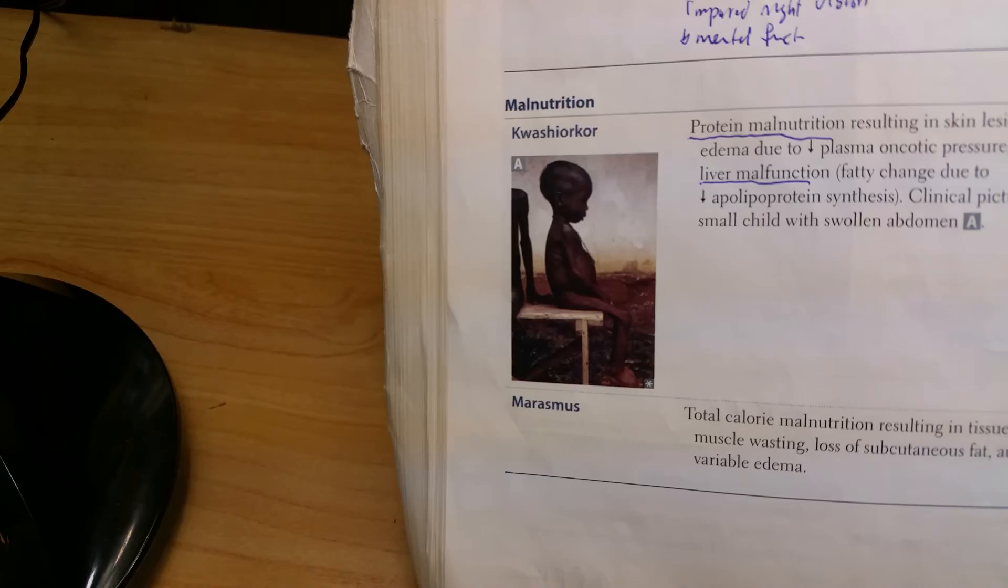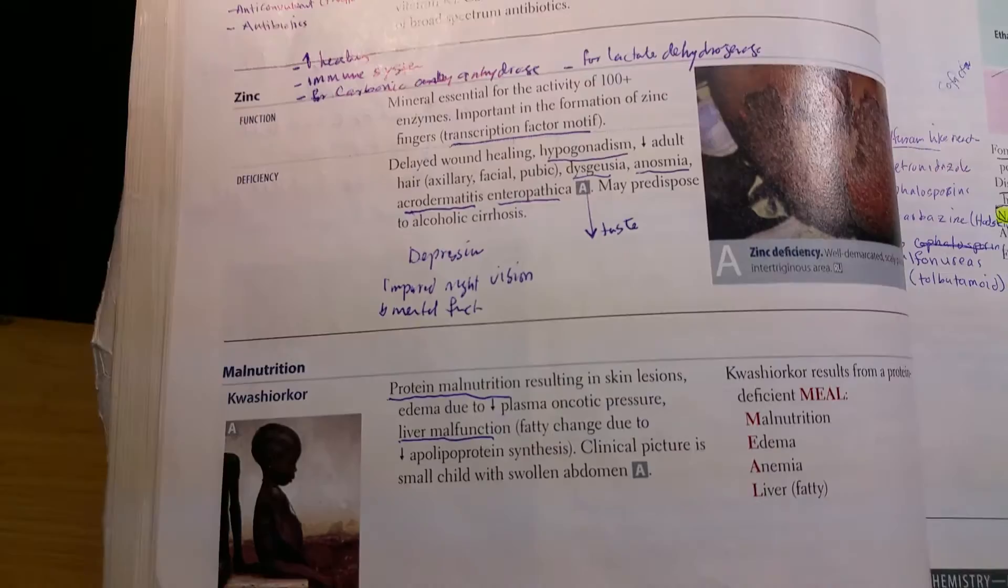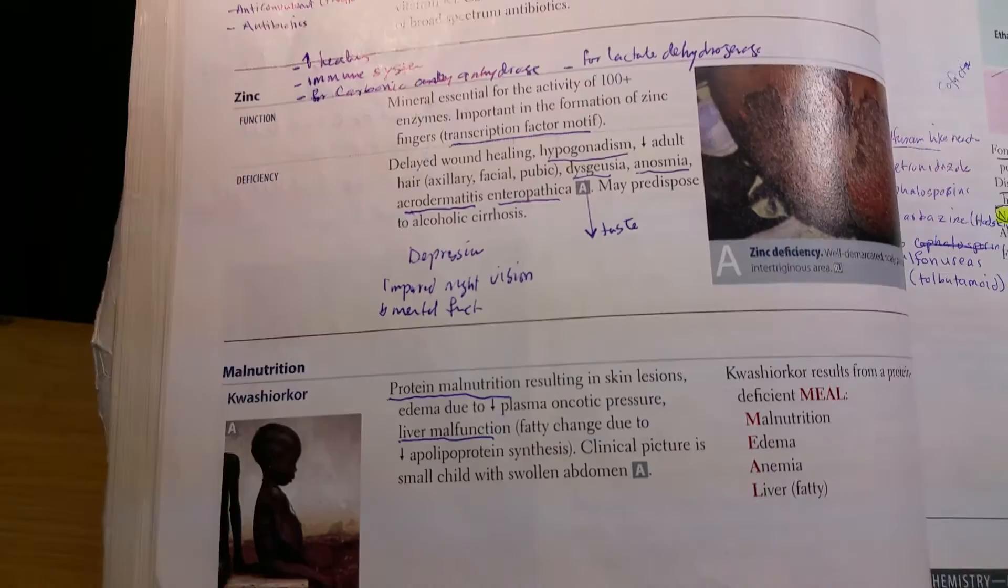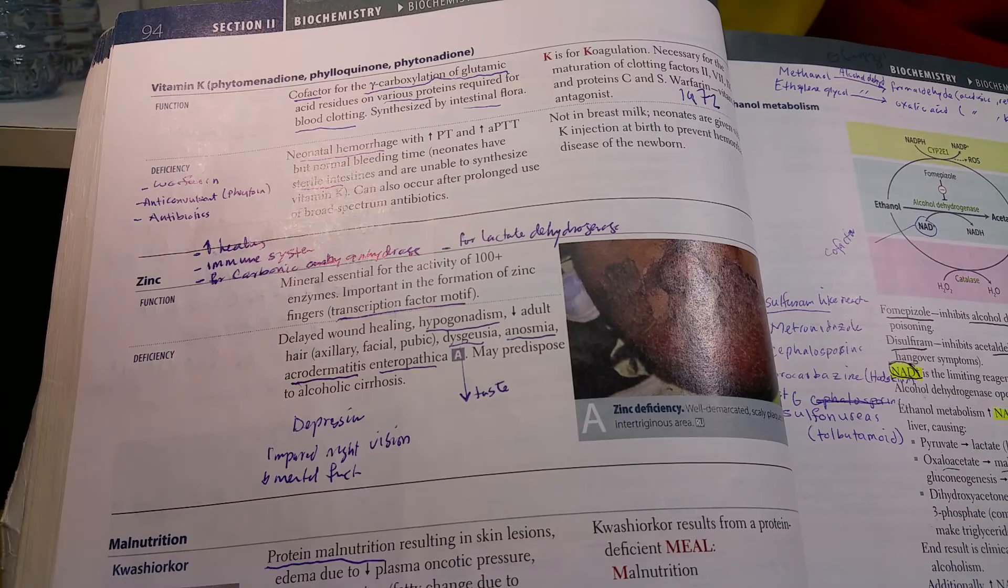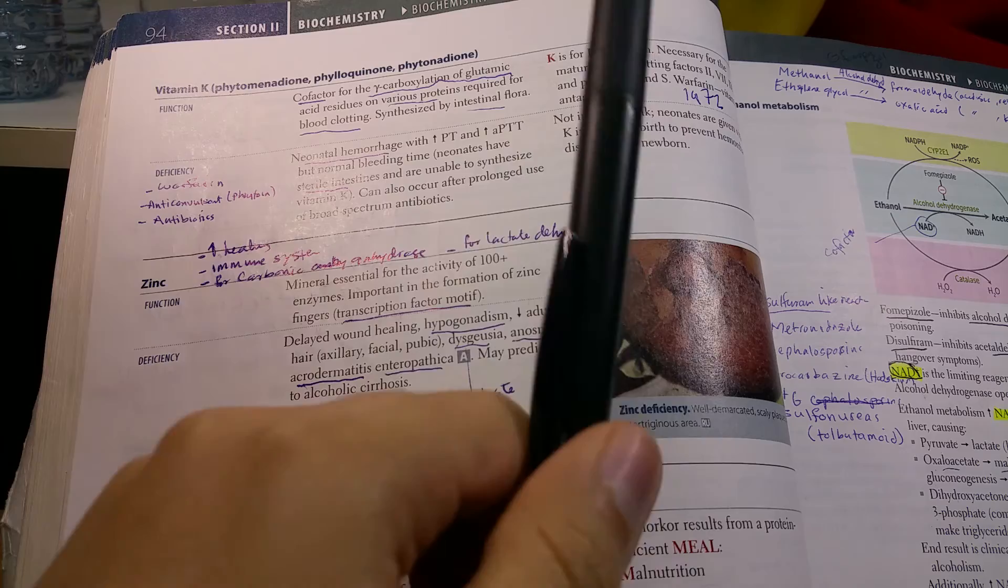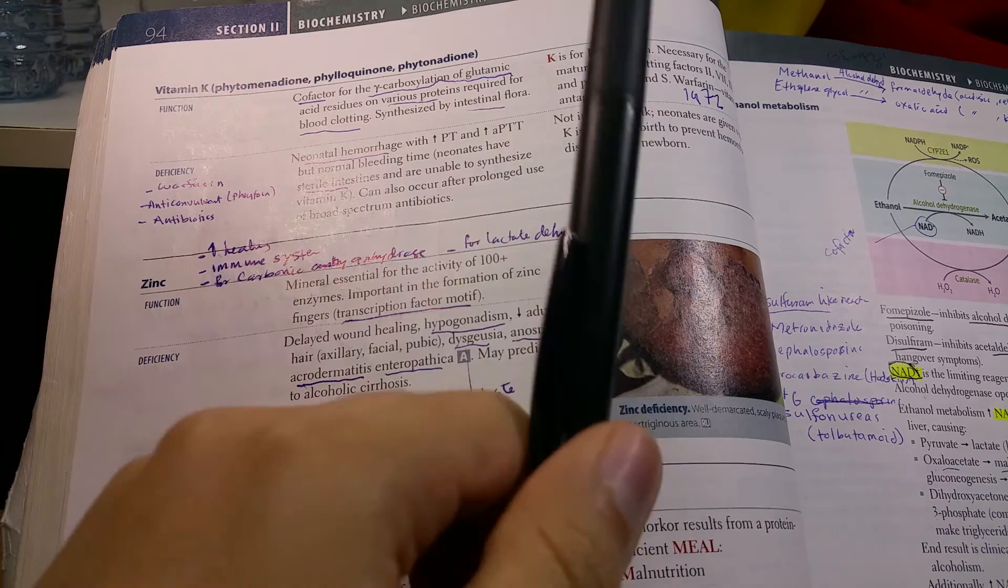Vitamin K is very important for the coagulation factors. It's a cofactor for gamma-carboxylation of glutamic acid in various blood clotting factors. It's synthesized by intestinal flora, and the clotting factors are 1, 9, 7, 2, plus protein C and protein S.